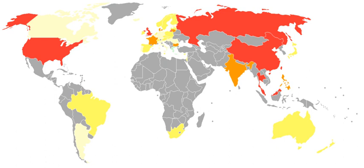In the United States today, invasion of privacy is a commonly used cause of action in legal pleadings. Modern tort law, as first categorized by William Prosser, includes four categories of invasion of privacy: intrusion of solitude, physical or electronic intrusion into one's private quarters; public disclosure of private facts, the dissemination of truthful private information which a reasonable person would find objectionable; false light, the publication of facts which place a person in a false light, even though the facts themselves may not be defamatory; and appropriation, the unauthorized use of a person's name or likeness to obtain some benefits.